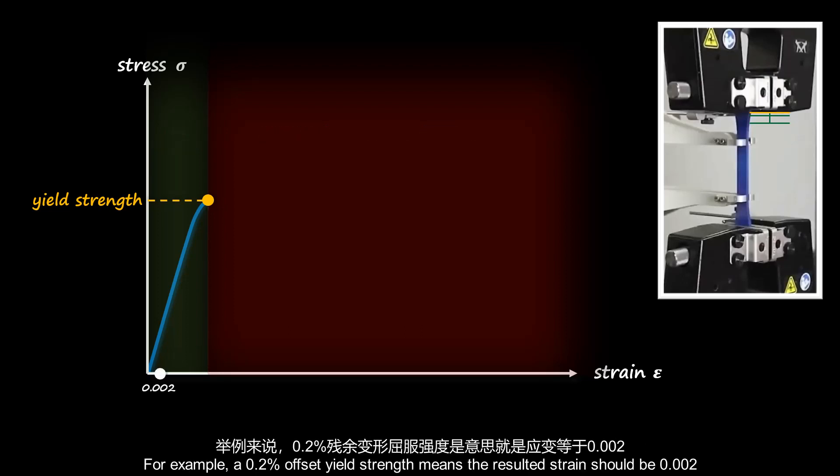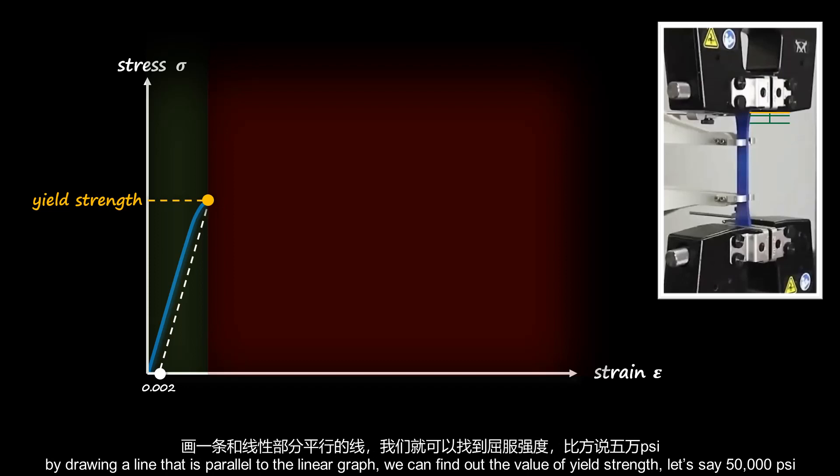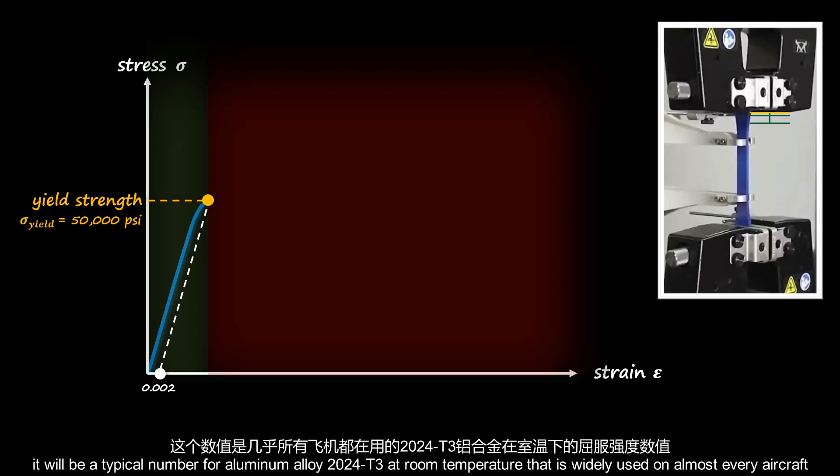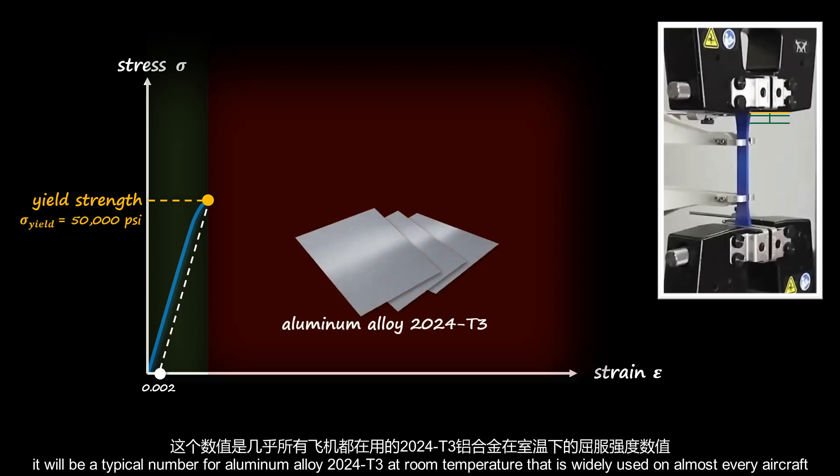For example, a 0.2% offset yield strength means the resulted strain should be 0.002. By drawing a line that is parallel to the linear graph, we can find out the value of yield strength, let's say 50,000 psi. It will be a typical number for aluminum alloy 2024-T3 at room temperature that is widely used on almost every aircraft.